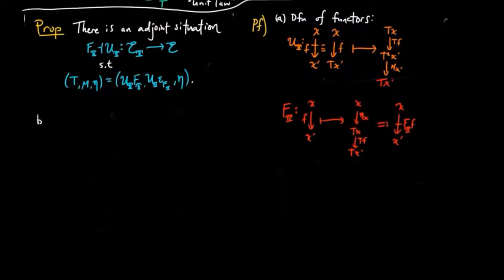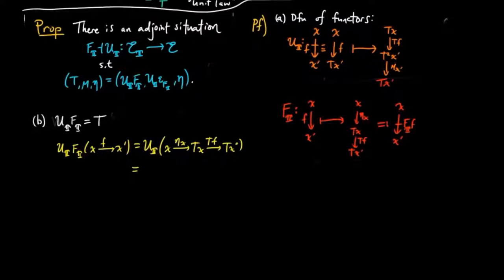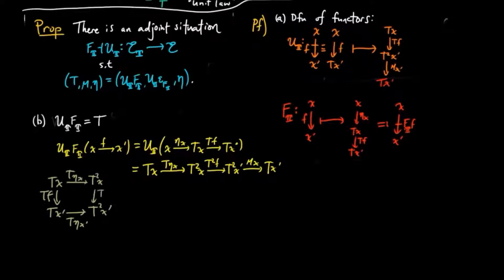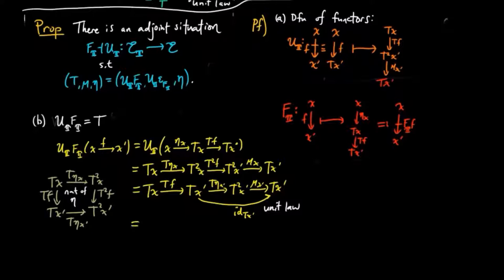Next, we check that the induced endofunctor is the same as T. If we first apply the free functor on the morphism F and then the forgetful functor, we obtain the following composition in E. Then by naturality of eta we can make the following substitutions, and by the unit law for the monad this reduces to TF. Hence we see that we have equality, confirming the induced endofunctor equals T.